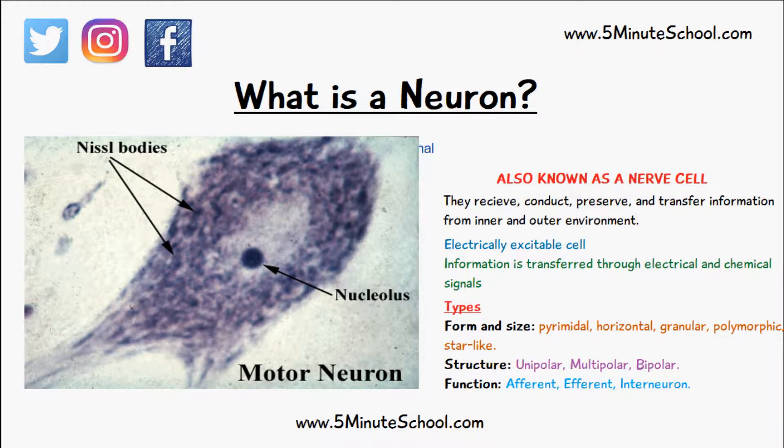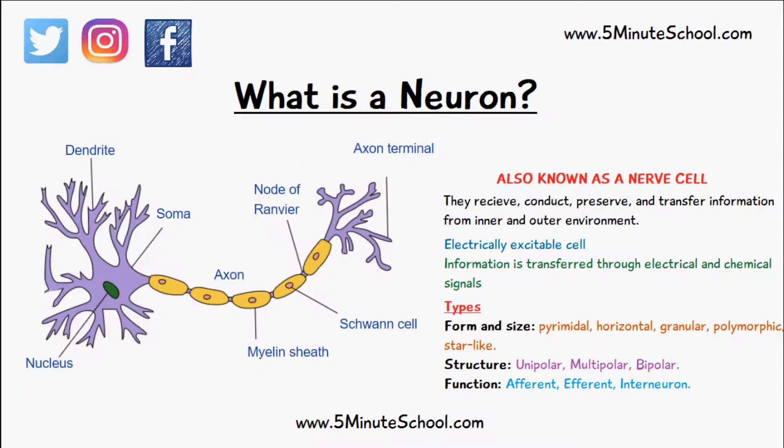The function of Nissl bodies is to make proteins, but they're also useful in staining neurons. There are also ribosomes and the other organelles that you'll see typical of an animal cell.